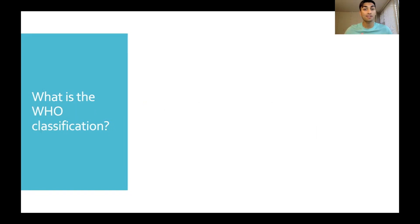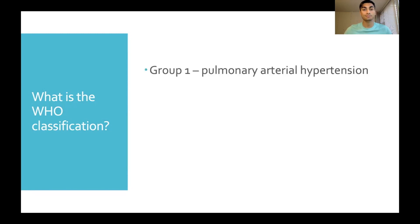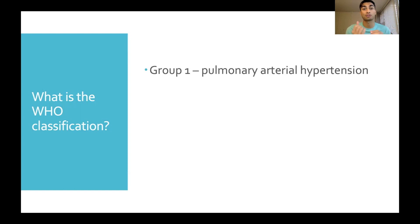So how does the WHO classify pulmonary hypertension? Group one is pulmonary arterial hypertension. This happens when the arteries get narrowed, thickened, or stiff. So the elevation in pressures is due to some sort of problem with the actual blood vessel itself.